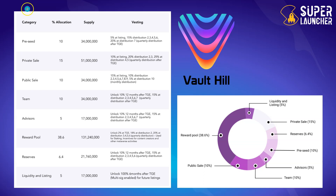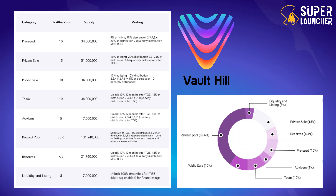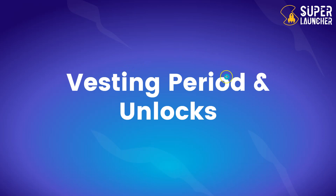Here is an example — the token allocation of Vault Hill. The categories are: pre-seed and private sales (investors) with 25% allocation to early investors, public sale at 10%, team at 10%, advisors at 5%, reward pool at almost 39%, reserves at 6.4%, and liquidity listing at 5%. Reserves can be included in the treasury allocation, and liquidity listing falls under the ecosystem allocation.